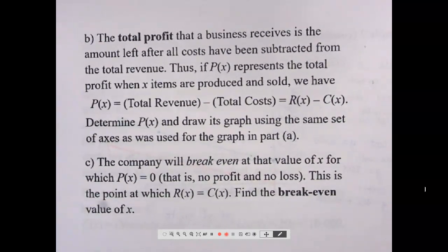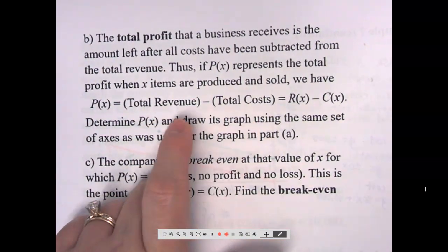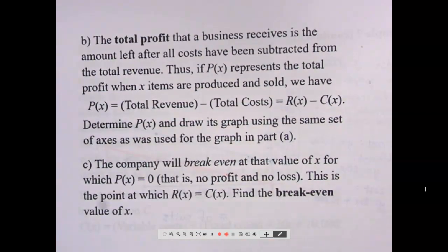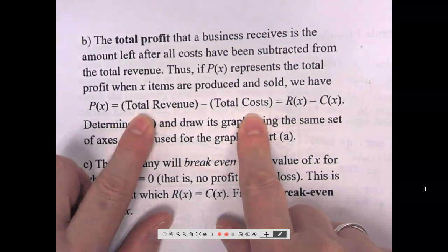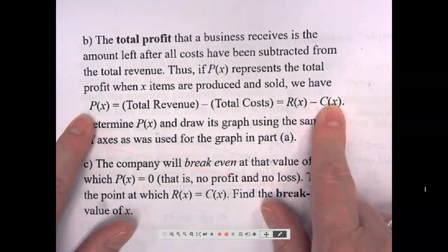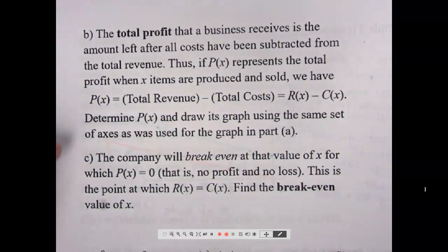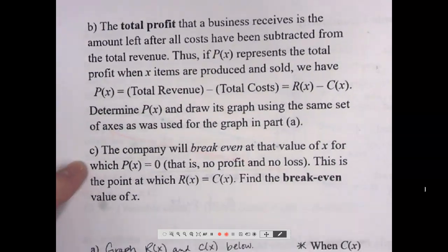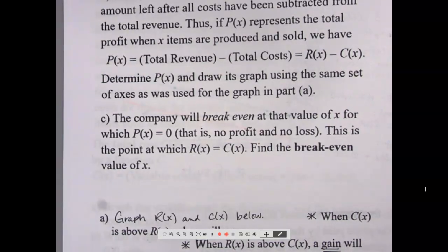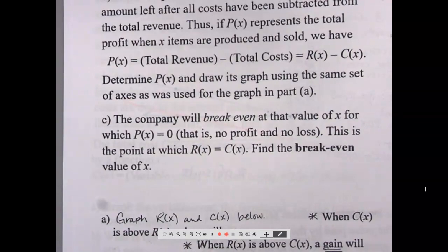The total profit is the amount left after all costs have been subtracted from total revenue. So profit P of x equals revenue minus cost. Revenue is what you're bringing in; cost is what's going out. Whatever's left — hopefully positive — is your profit. The company will break even at the value of x for which profit is zero — you're not making money but not losing money either. This is the point where revenue and cost are equal. We need to find the break-even value of x.